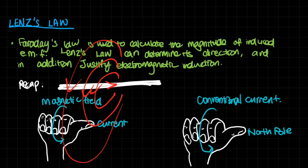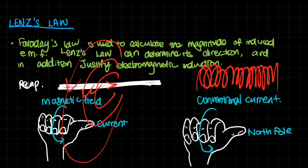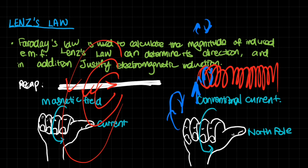The right-hand rule also applies to a solenoid. For a solenoid, if the conventional current runs in a particular direction around the coil, curling your fingers from outside to inside tells you which end is the North Pole and which is the South Pole. The North Pole would be on one side and the South Pole on the other. You just use the same rule for the applicable situation.